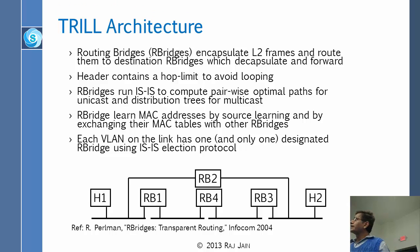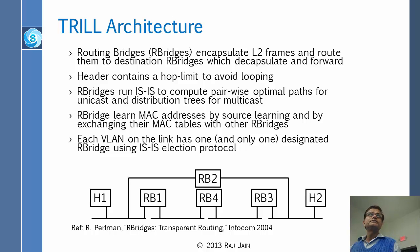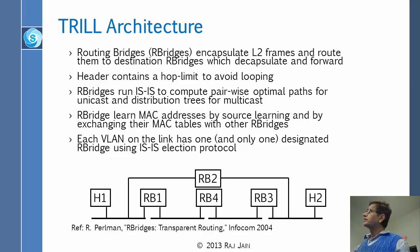She invented a concept called routing bridges, or R-bridges. What R-bridges do is they take the packet and route it to the destination. A normal bridge will take the packet and put it on the other side. Instead of doing that, R-bridges encapsulate the L2 frames and route them to destination R-bridges, which decapsulate and forward. The real nodes see only Ethernet packets. The header contains a hop limit to avoid looping, just like the time-to-live field in any IP packet.